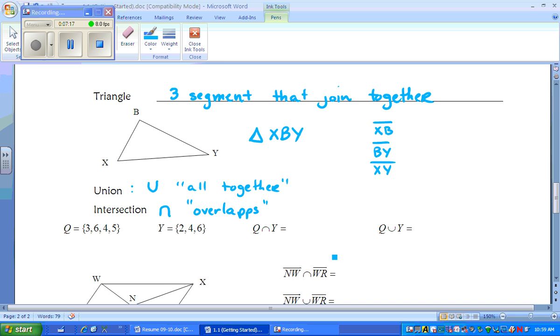In this example here, we're asking you to look at Q as the intersection of Y. If you look at the example, Q is {3, 6, 4, 5} and Y is {2, 4, 6}. What numbers do they have overlapping? They both have a 6 and a 4, so the set would be {4, 6} would be the overlapping.